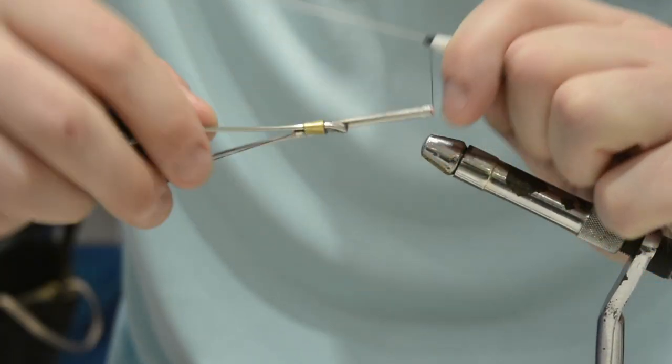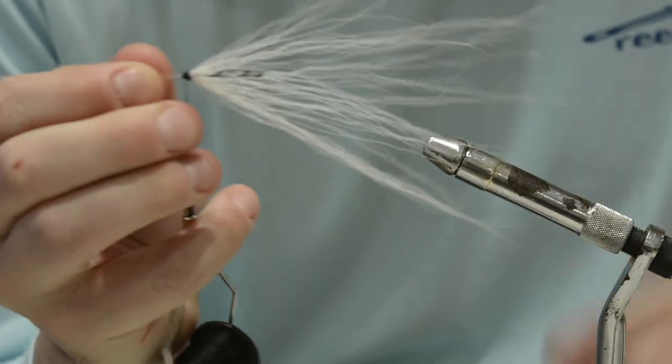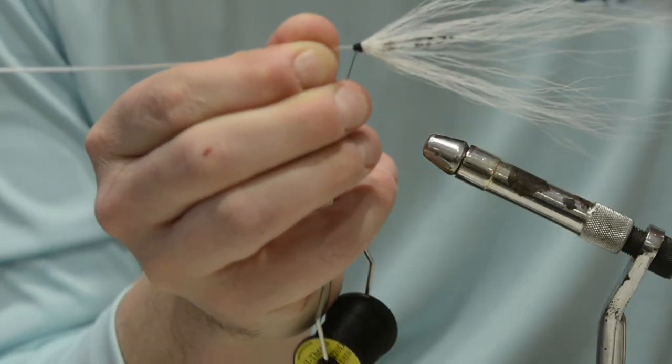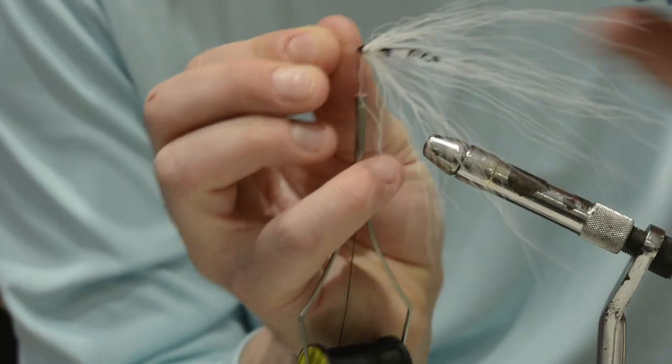Instead of using the crazy glue, you could probably use wax and that'll hold it pretty well. Alright, so I lost the first tie. I don't care about that. That's not what this video is about. So there's our first hollow tie.